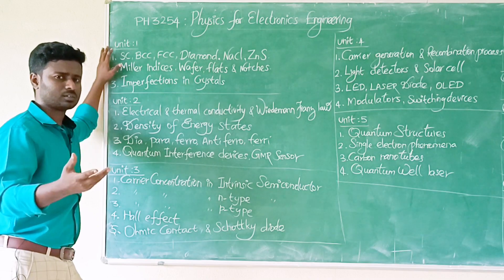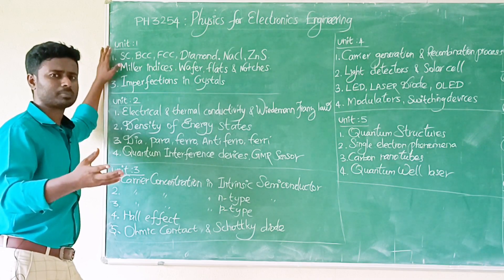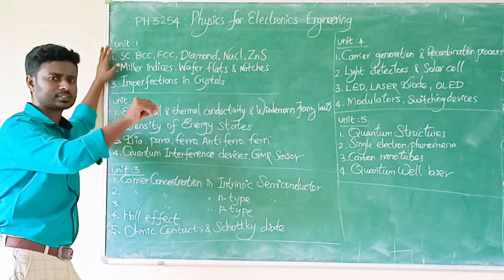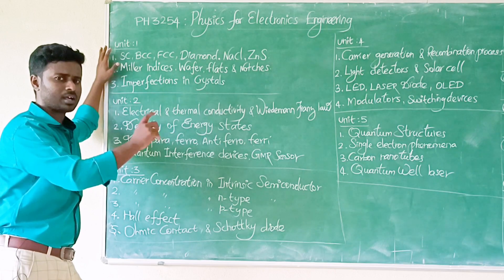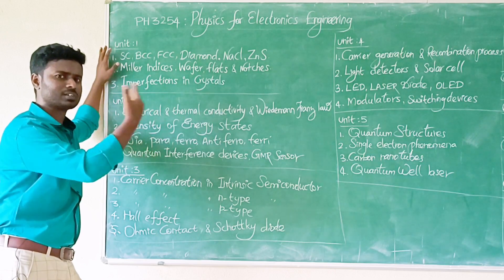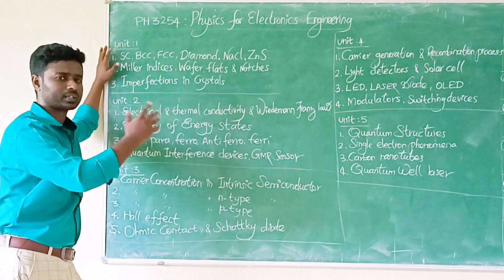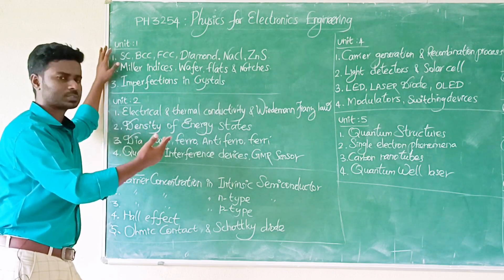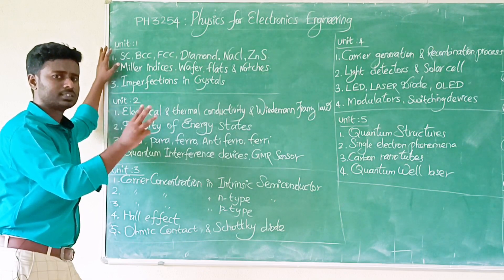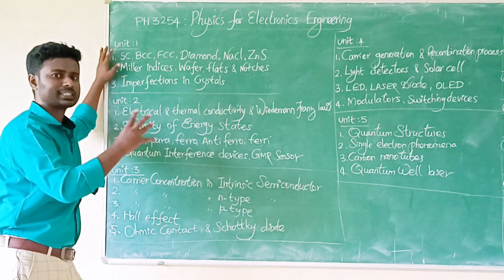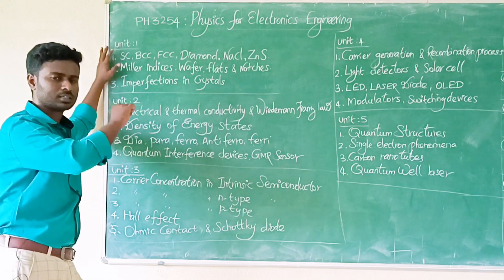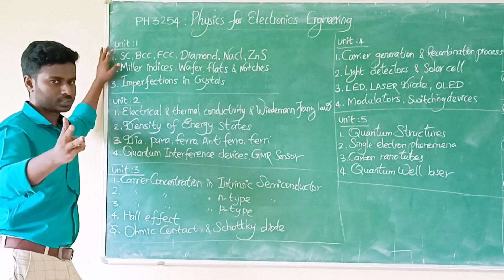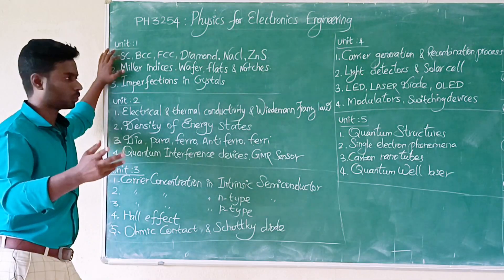Miller indices — easy, three steps. Step one: identify intercepts on the X axis, Y axis, Z axis. Step two: take the inverse (reciprocals). Step three: if needed, find the LCM to clear fractions. That gives you the Miller indices.